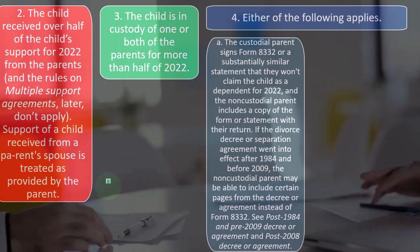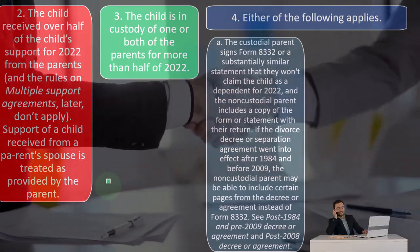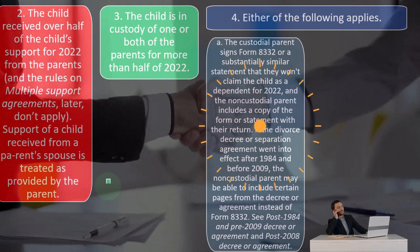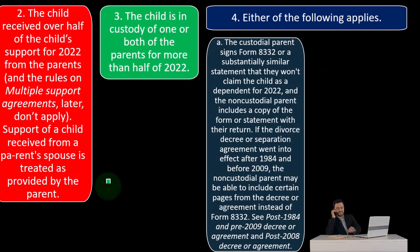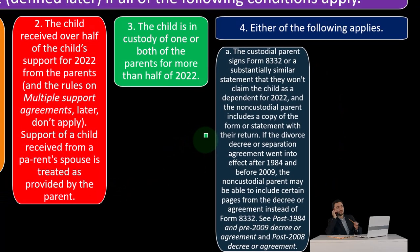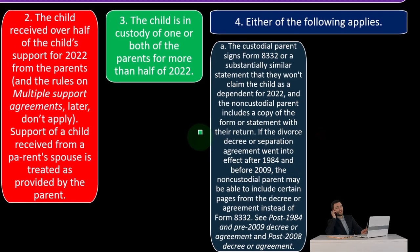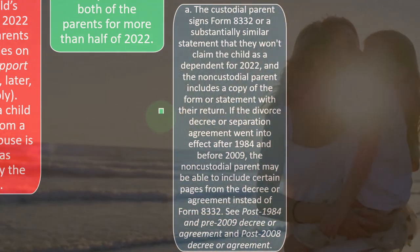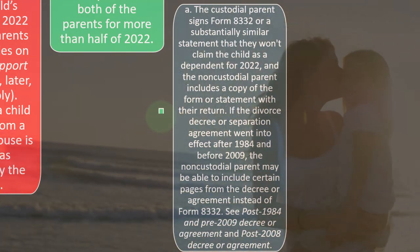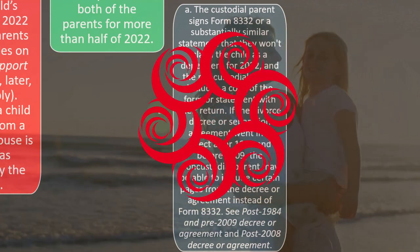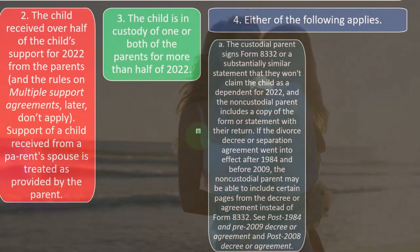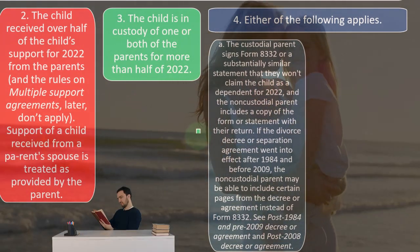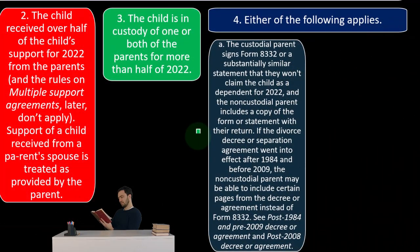That's what they agreed on. The non-custodial parent then includes a copy of the form or statement with their return to verify that this is indeed the case. If the divorce decree or separation agreement went into effect after 1984 and before 2009, the non-custodial parent may be able to include certain pages from the decree or agreement instead of Form 8332. See the post-1984/pre-2009 and post-2008 decree or agreement sections for more information.